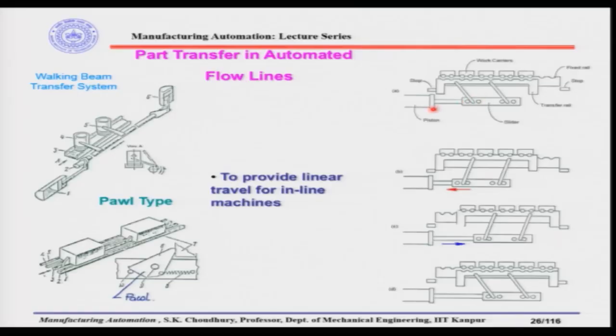Welcome back. Let me remind you we were discussing the path transfer in automated flow lines, as you can see from the diagram. This is for the linear travel from one workplace to another workplace for any part or for any sub-assembly, if it is an assembly flow line.